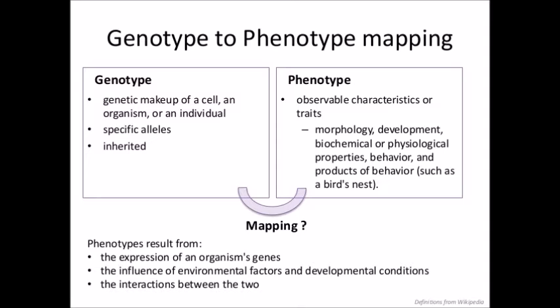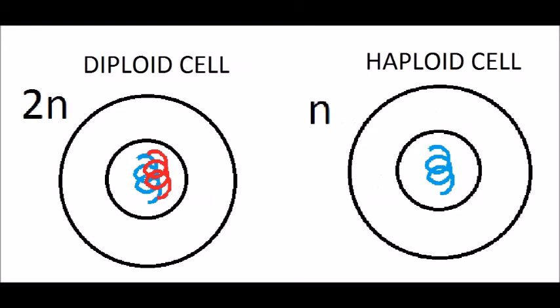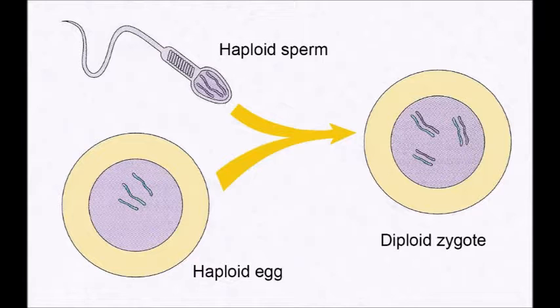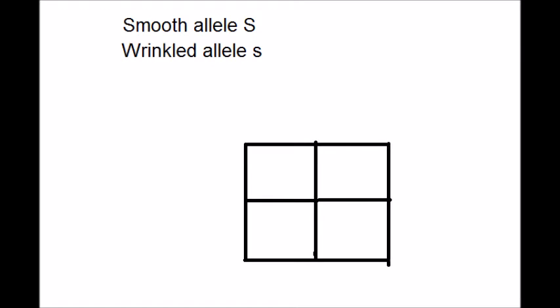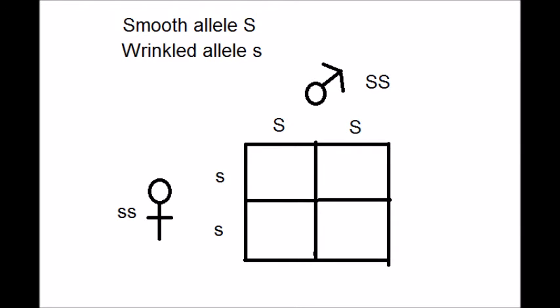The peas that Mendel worked with are diploid, meaning they contain two sets of chromosomes having inherited one set from each parent. Diploid organisms produce haploid gametes which contain only one set of chromosomes, and the male and female gametes fuse together creating diploid offspring. In our Punnett square we represent the smooth allele with an uppercase S indicating it is dominant and the wrinkled allele with a lowercase s indicating it is recessive. Above the square we write the possible genotypes of the gametes the male can produce and on the left the genotypes of the female's gametes. In this case the male has genotype SS and the female has genotype ss.